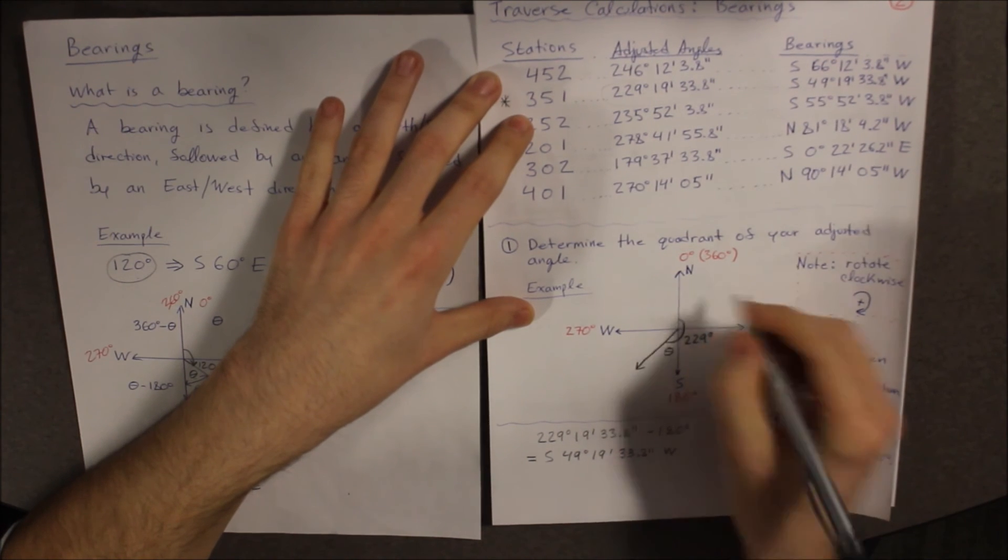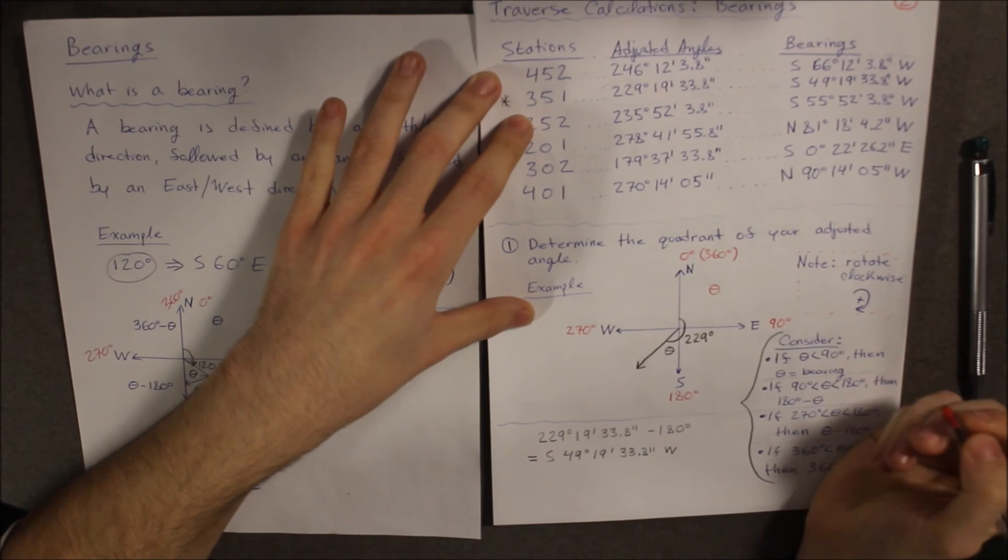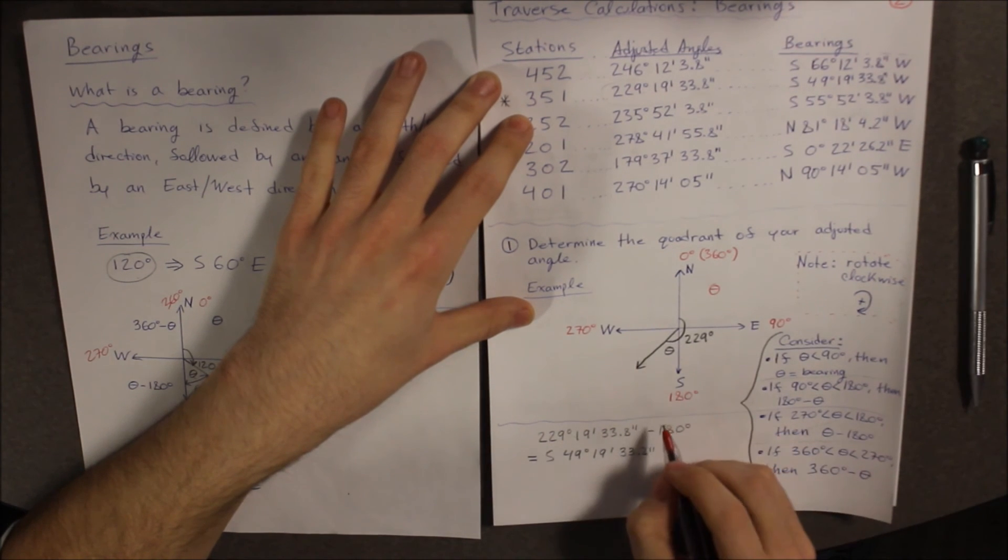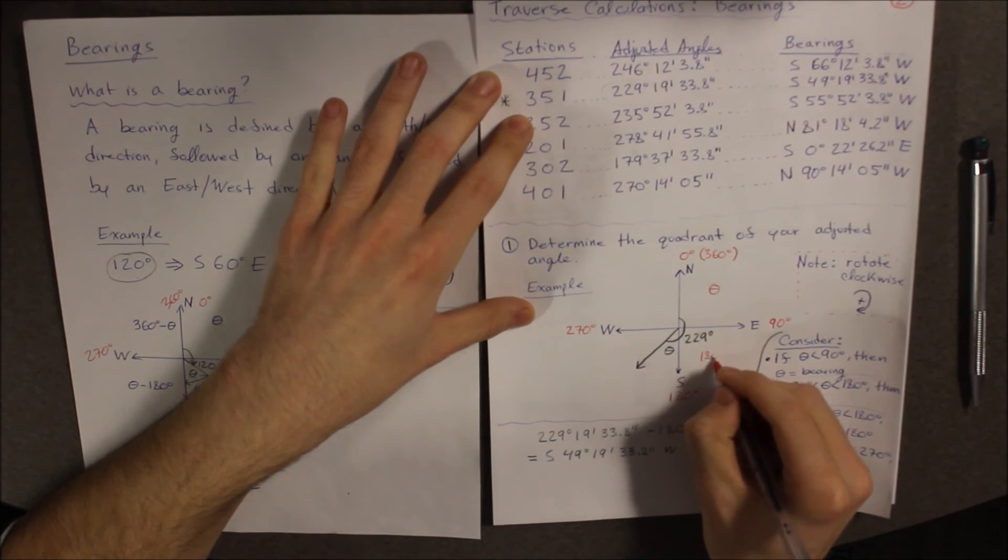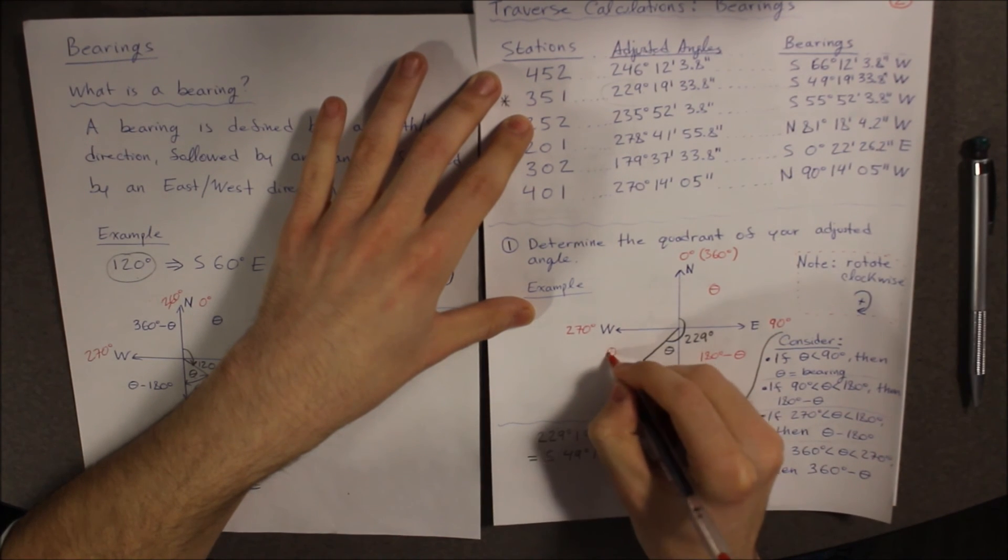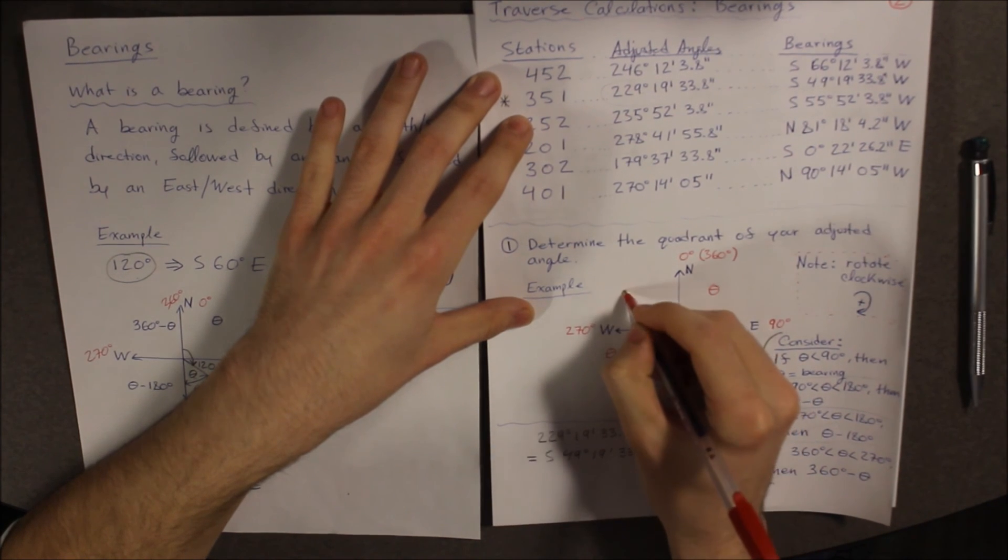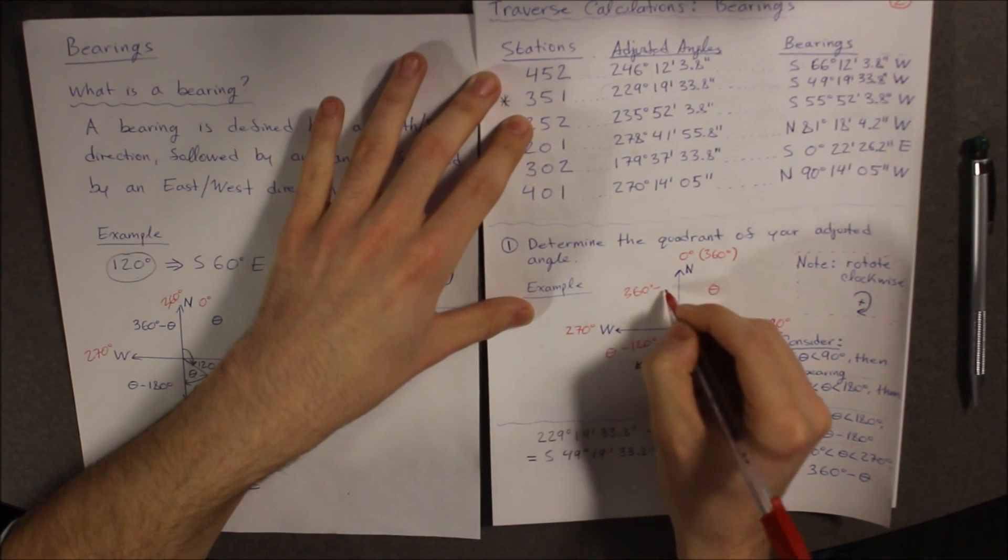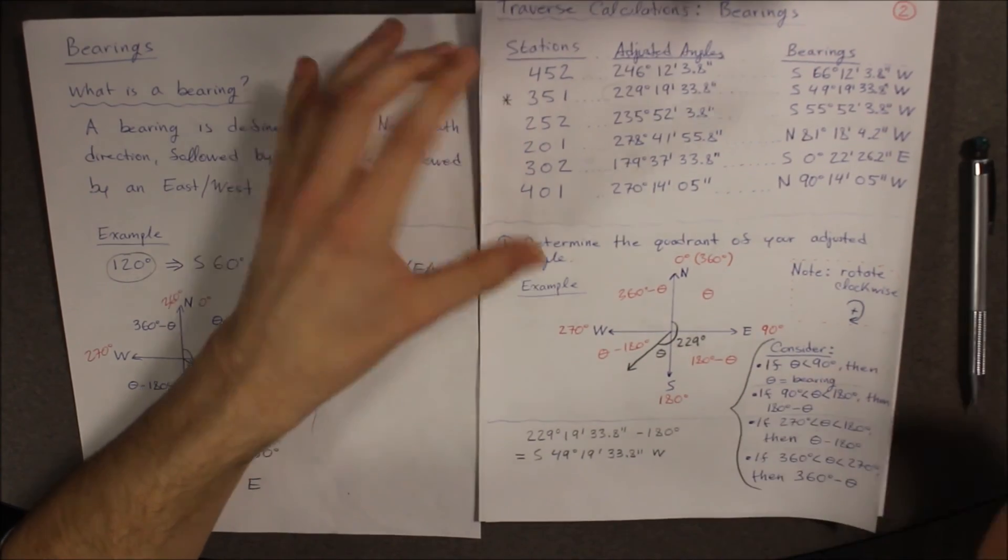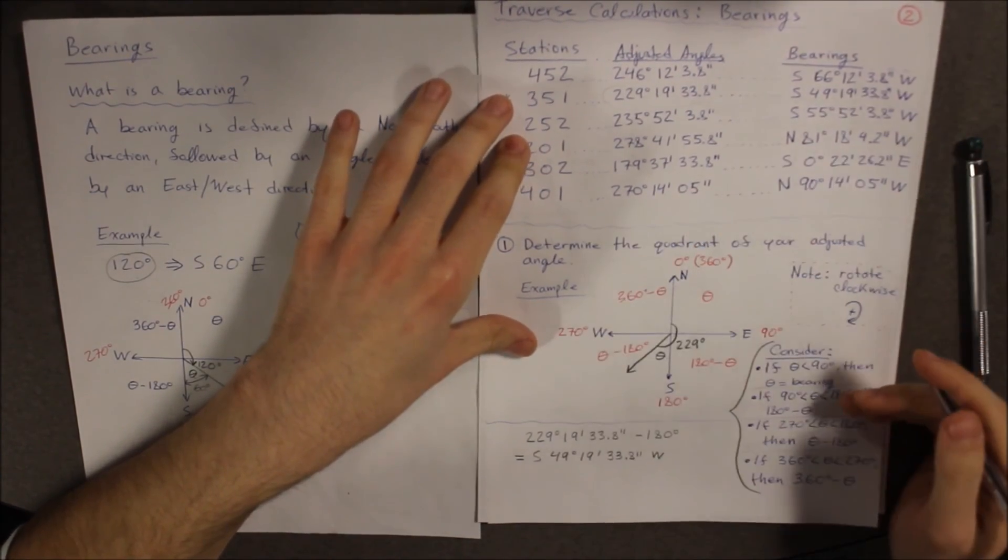I will just quickly write this out for you right now, just so you can see it. So if you are here, it is theta. If you are here, then it is 180 degrees minus theta. If you are here, then it is theta minus 180 degrees. And if you are here, then it is 360 degrees minus theta. That is how you convert your adjusted angles to bearings in your traverse calculations.